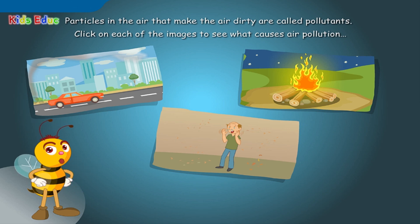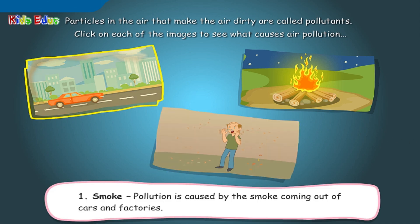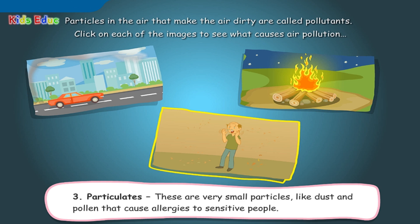Particles in the air that make the air dirty are called pollutants. Smoke: pollution is caused by the smoke coming out of cars and factories. Smog: burning of coal releases a lot of smoke in the winter season — smoke combines with fog to create smog. Particulates: these are very small particles, like dust and pollen, that cause allergies to sensitive people.